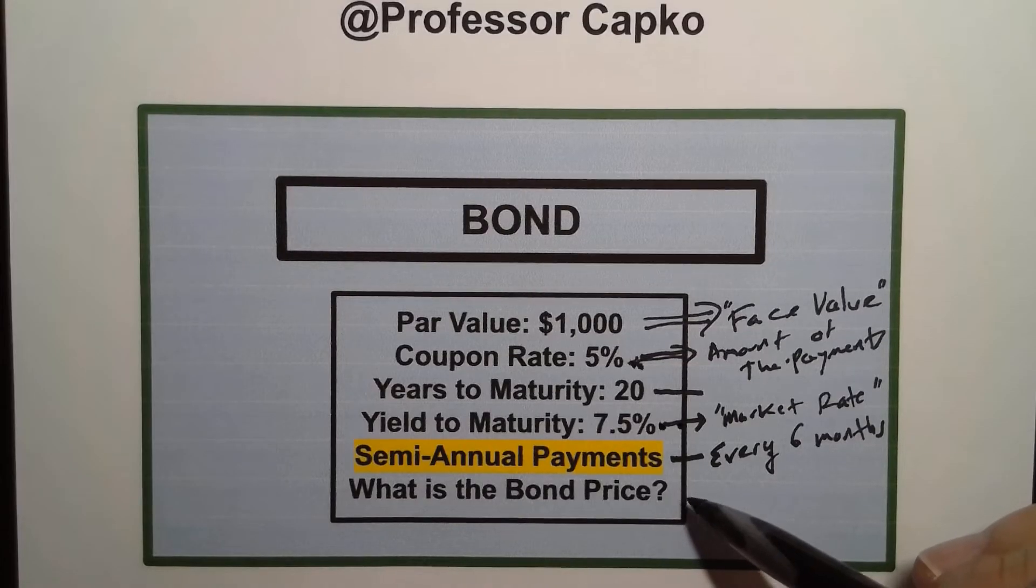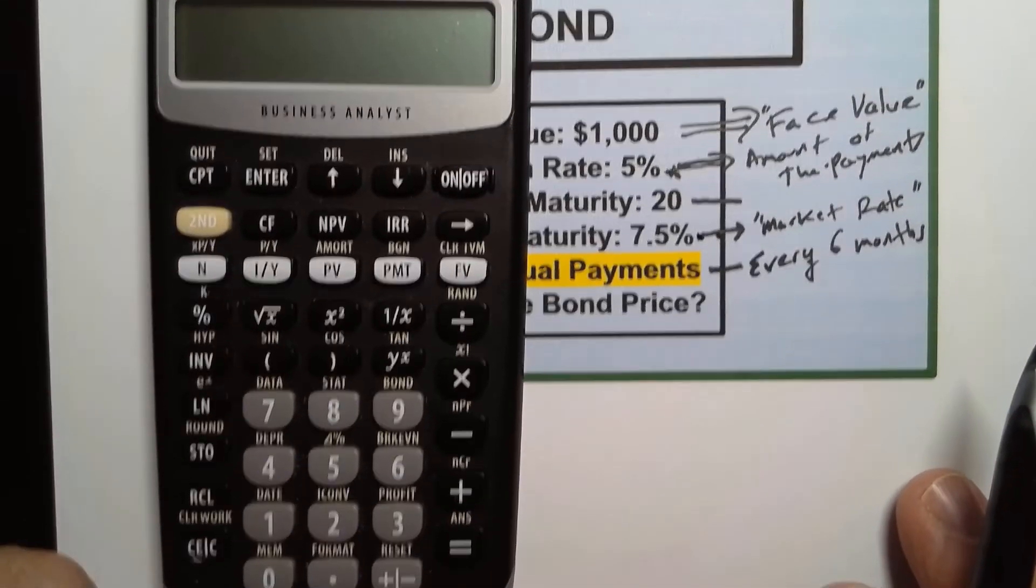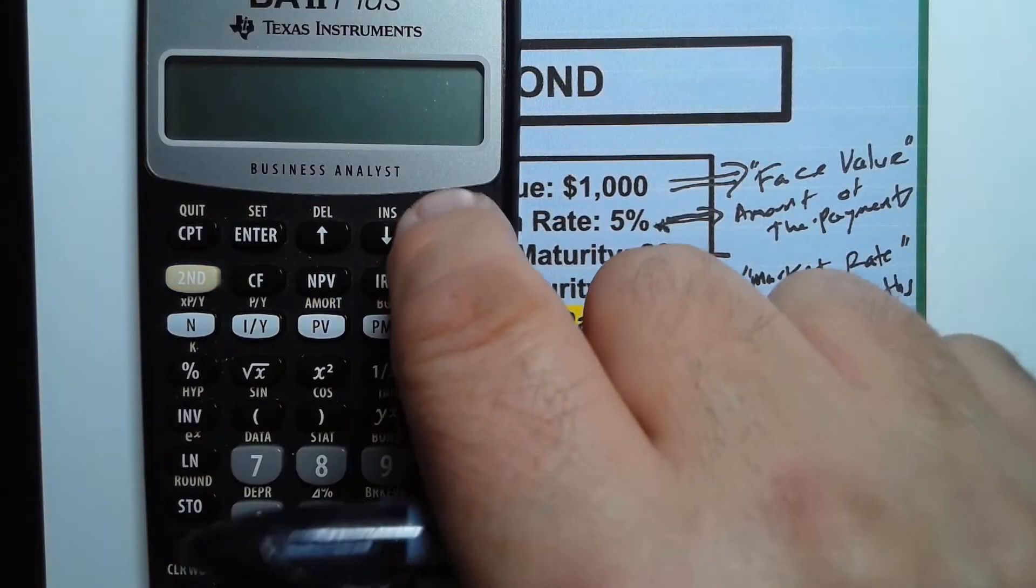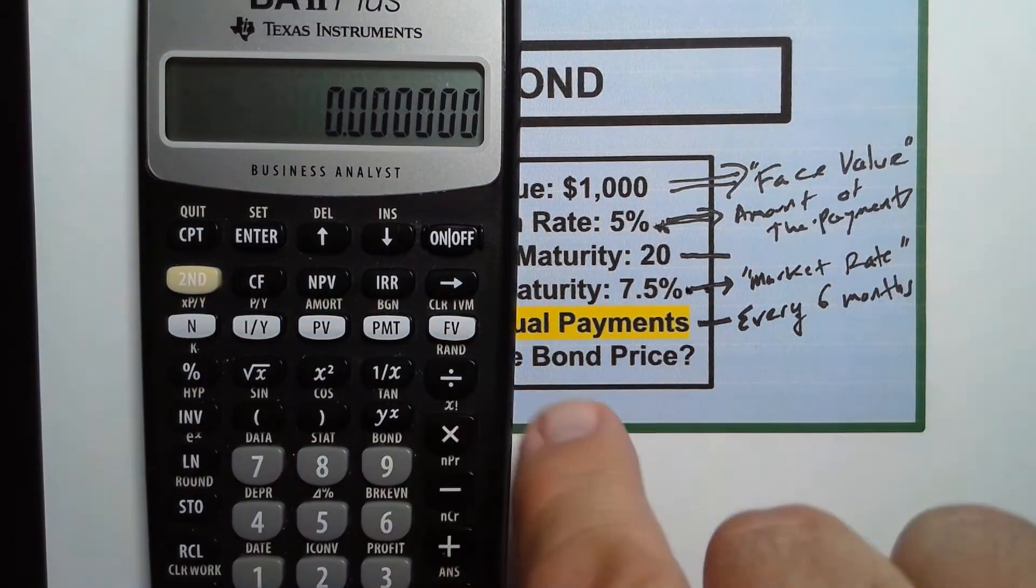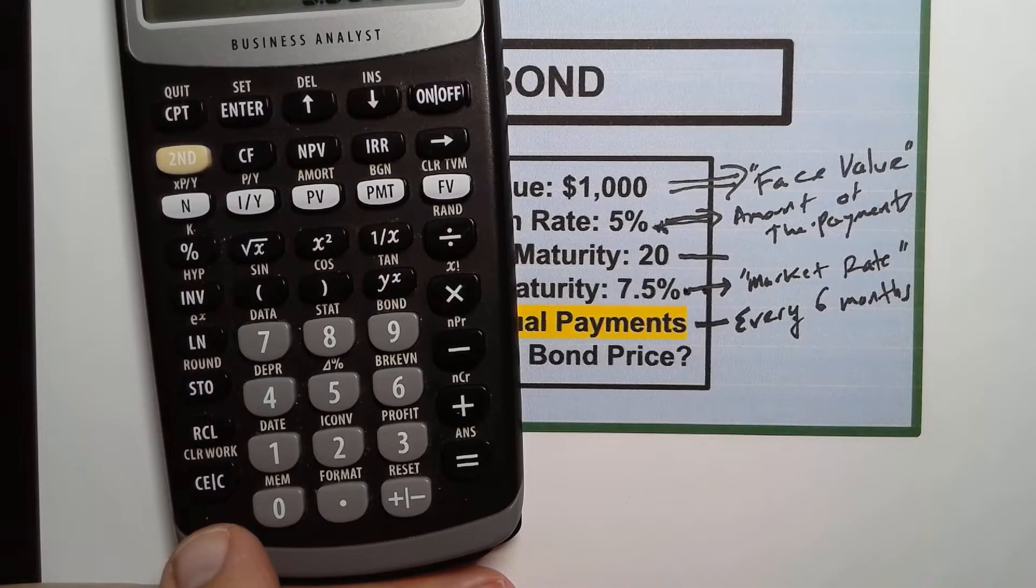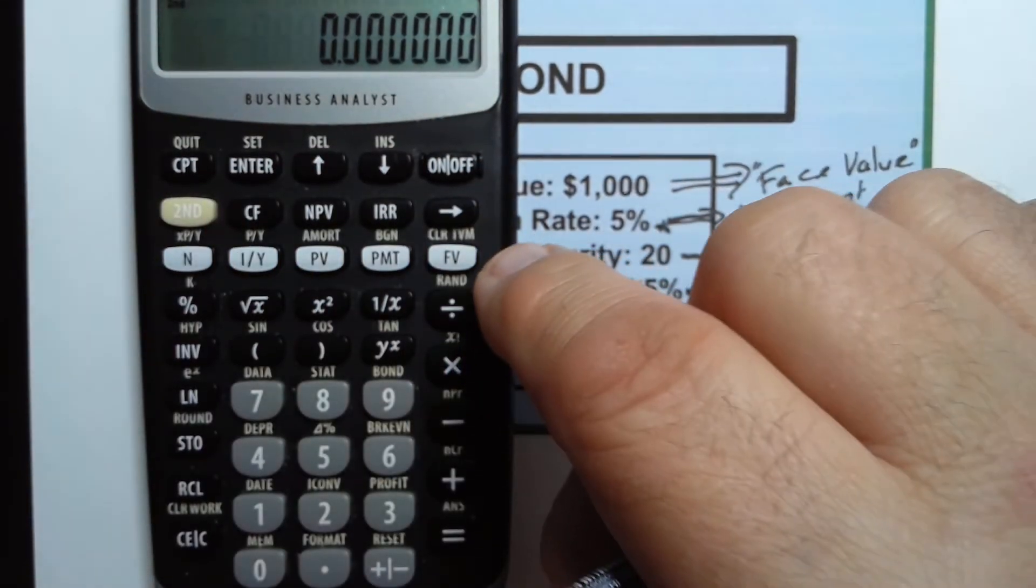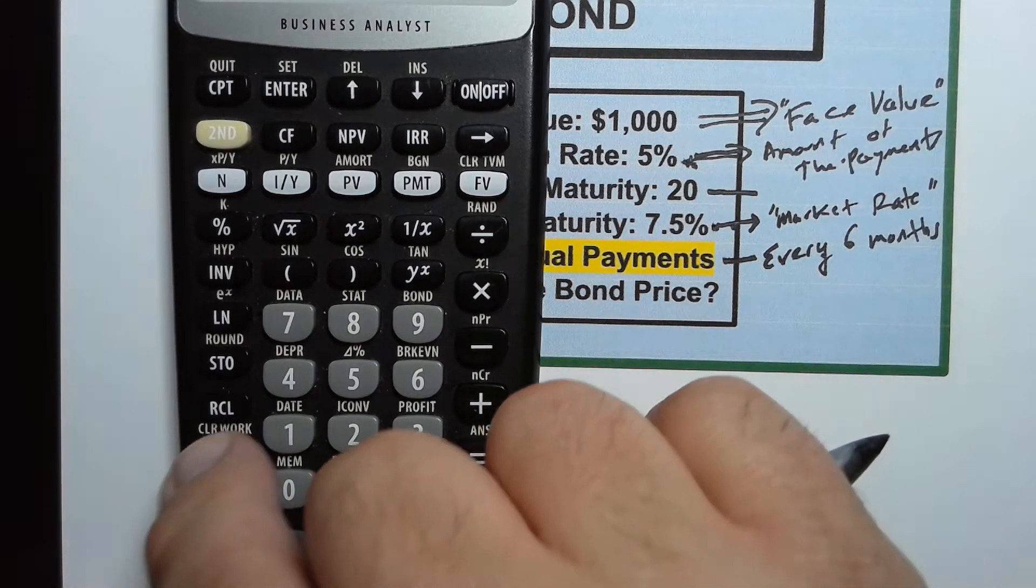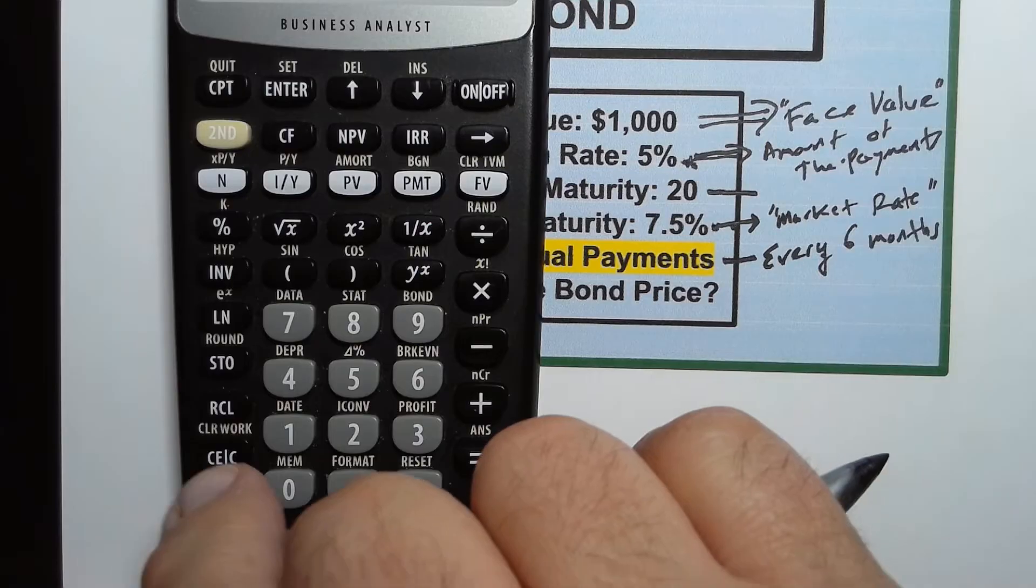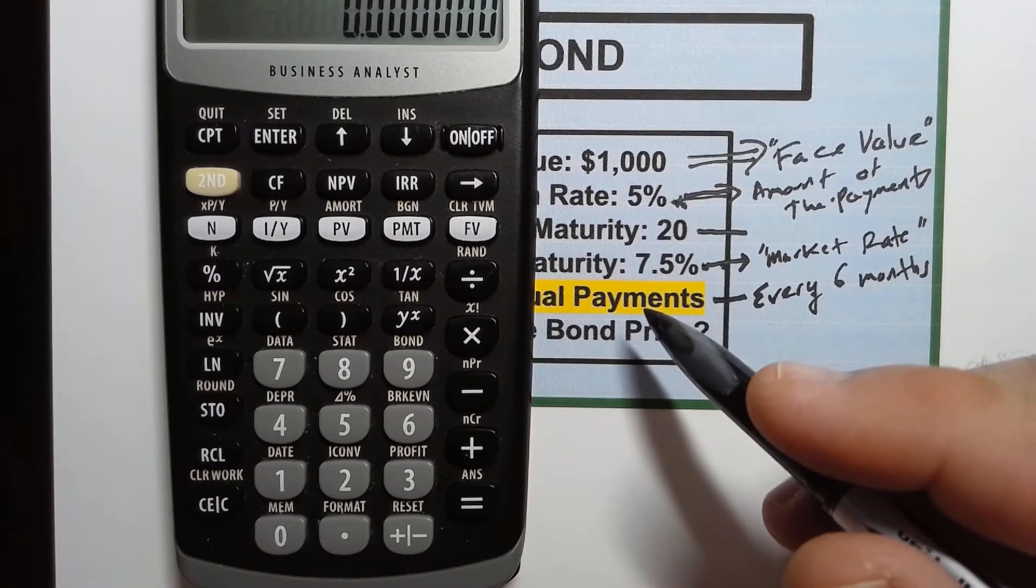All right so semi-annual payments we're going to figure out what the bond price is. I'm going to use my BA2 plus calculator to figure this out and let's go through the process. So I'm going to turn it on and remember the first thing I do with all these always clear out the time value of money. It's not enough to hit the CE slash C. You need to clear out the time value of money and you do that with hitting second and this CLR TVM clear that time value of money. Then I like to also clear my work. So I hit second again and I clear CLR WRK clear my work and then just to make sure I go ahead and hit the CE slash C without hitting the second button that should clear out all the prior work that's in there.